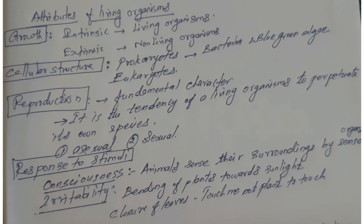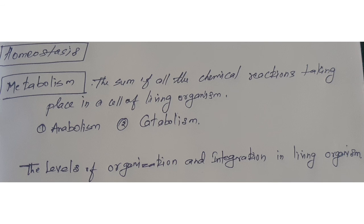Next, homeostasis. Homeostasis is a property of self-regulation and a tendency to maintain a steady state within an external environment. For example, the body temperature is maintained at a constant level — not too high or too low. That is called homeostasis.